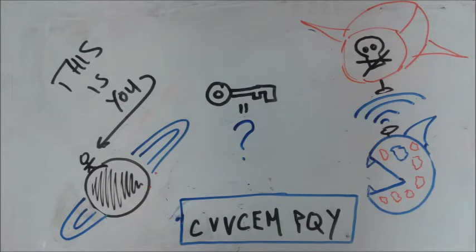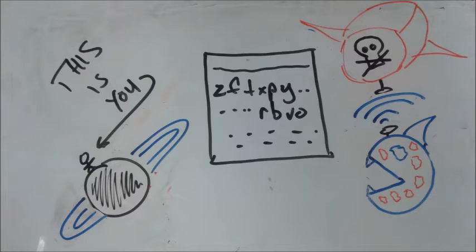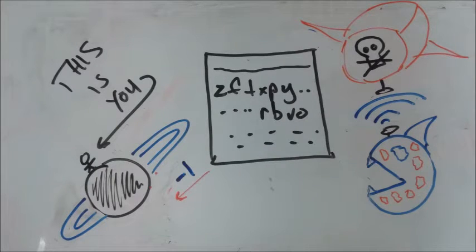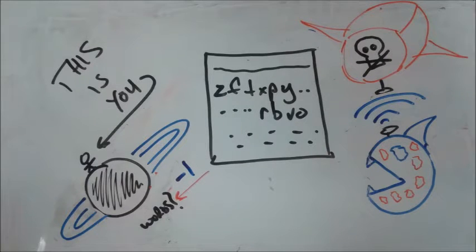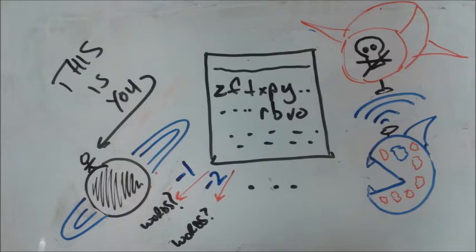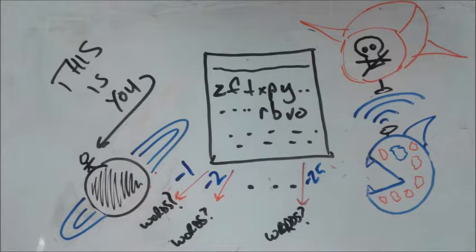But unfortunately, you have no idea what the key is. You quickly realize, since there's only 26 letters in the alphabet, you can take an encrypted message, shift it back by 1, see if that solves it, shift it back by 2, see if that solves it, and just keep going until you shift it back by 25 or 26.